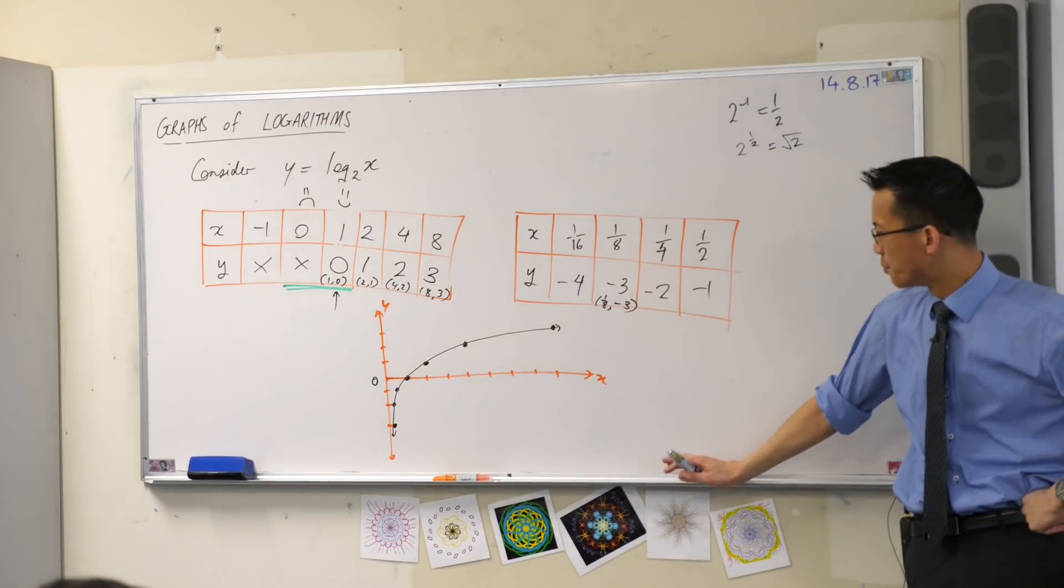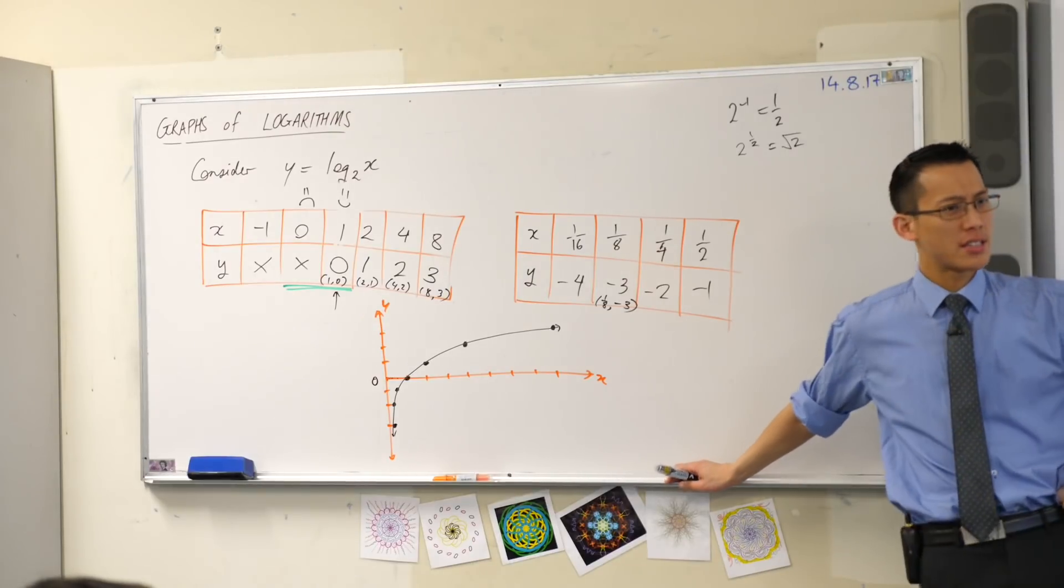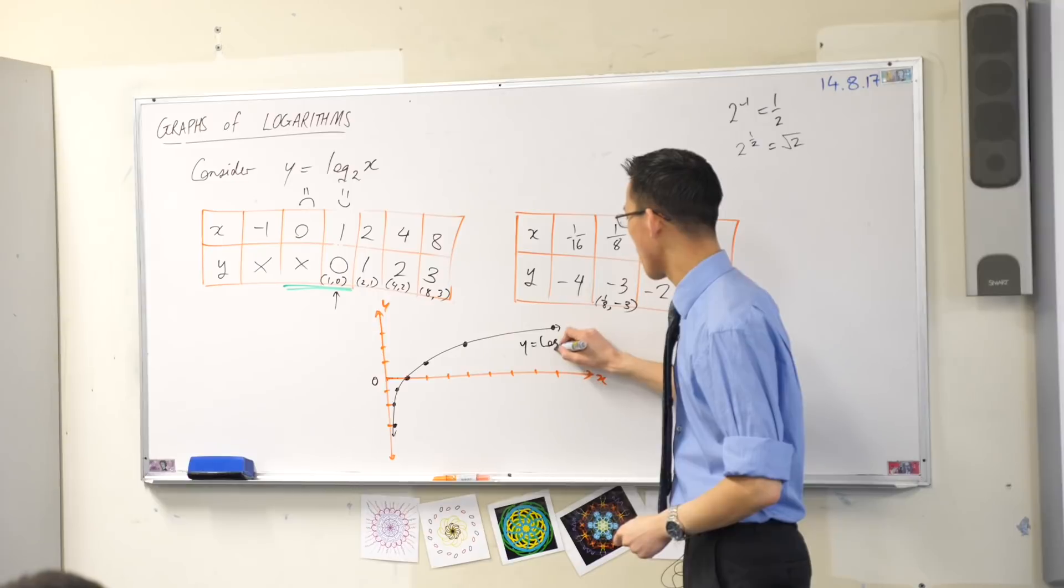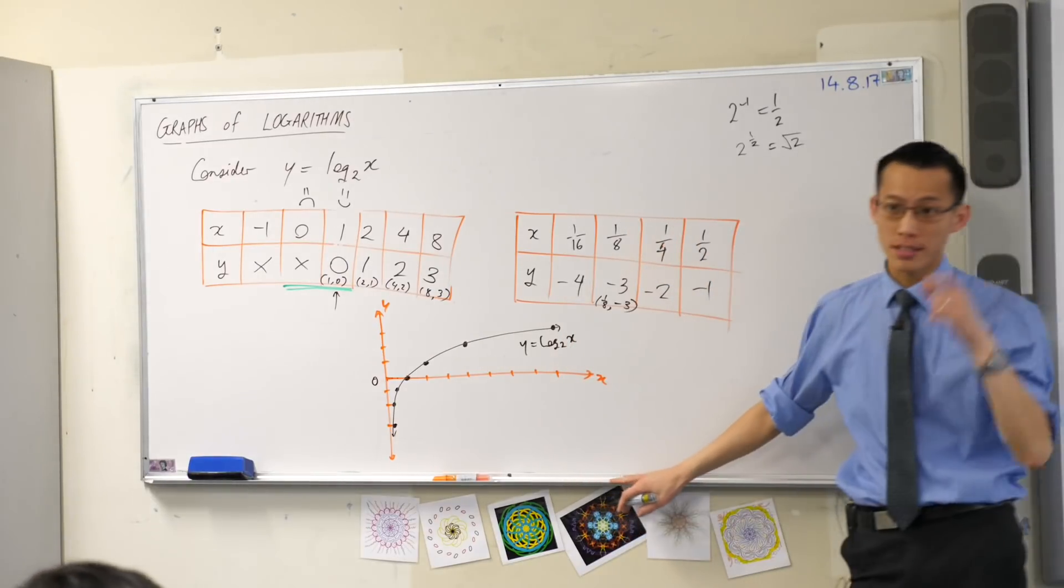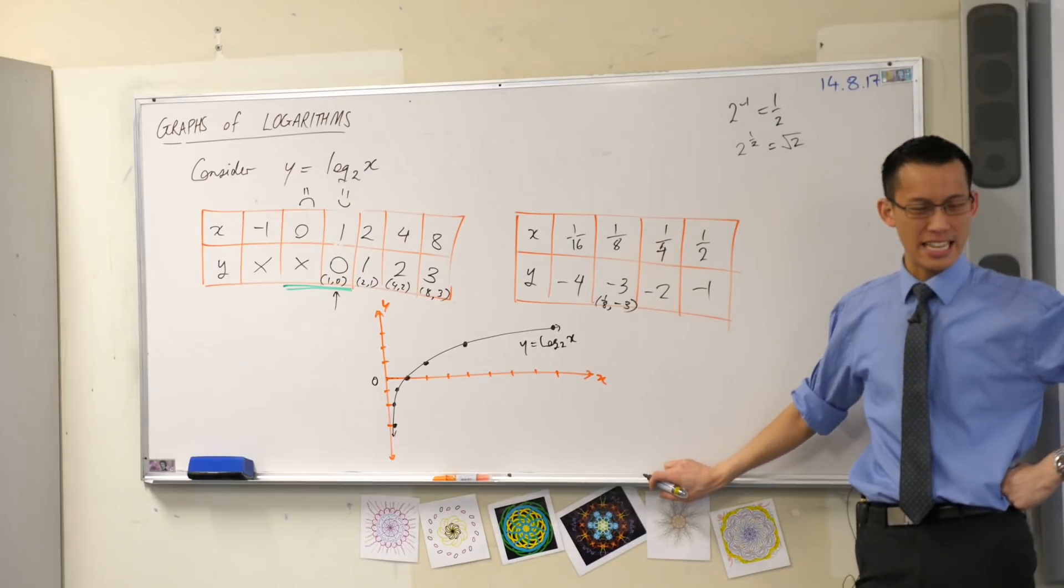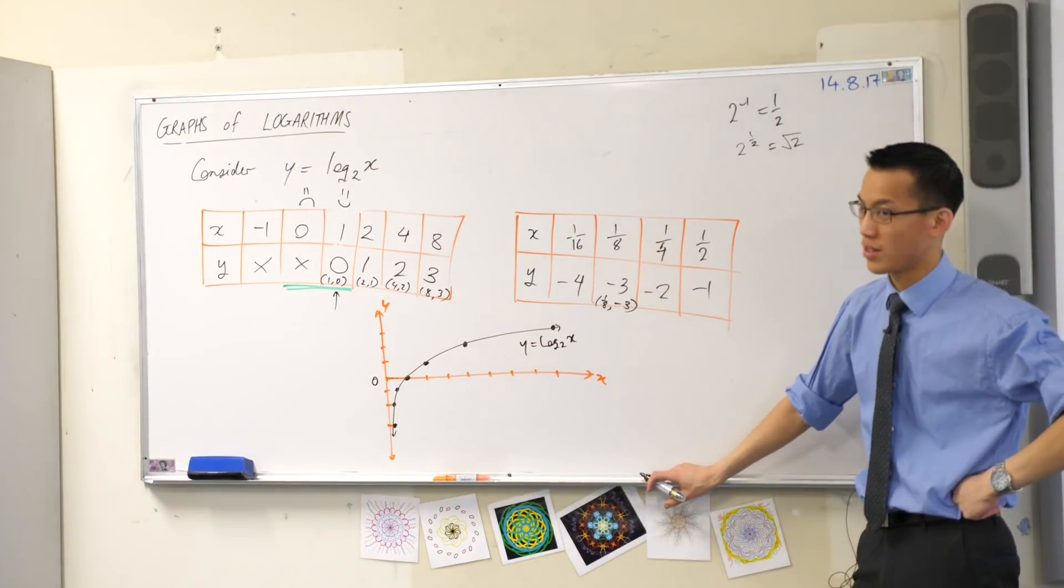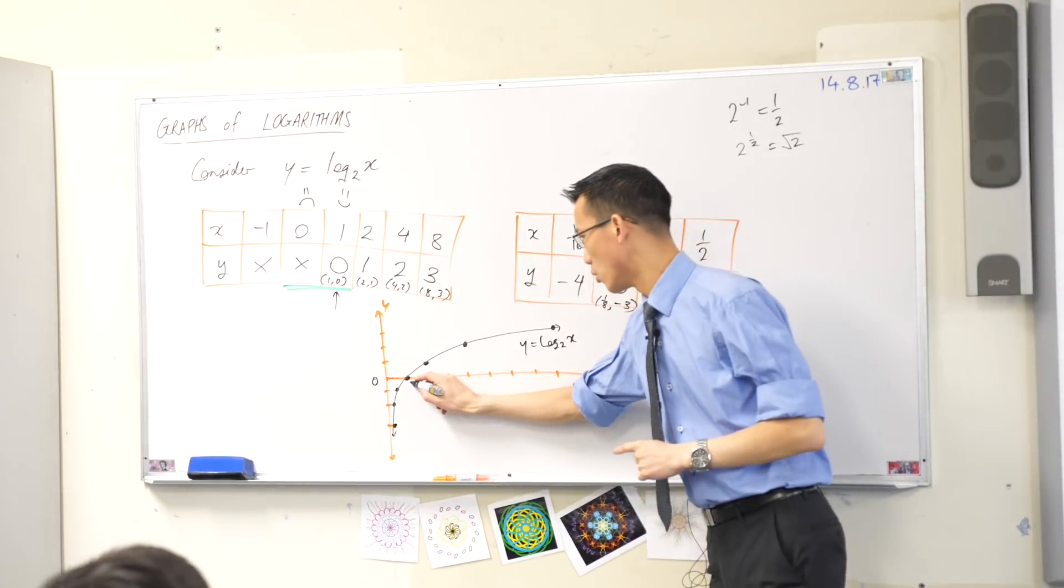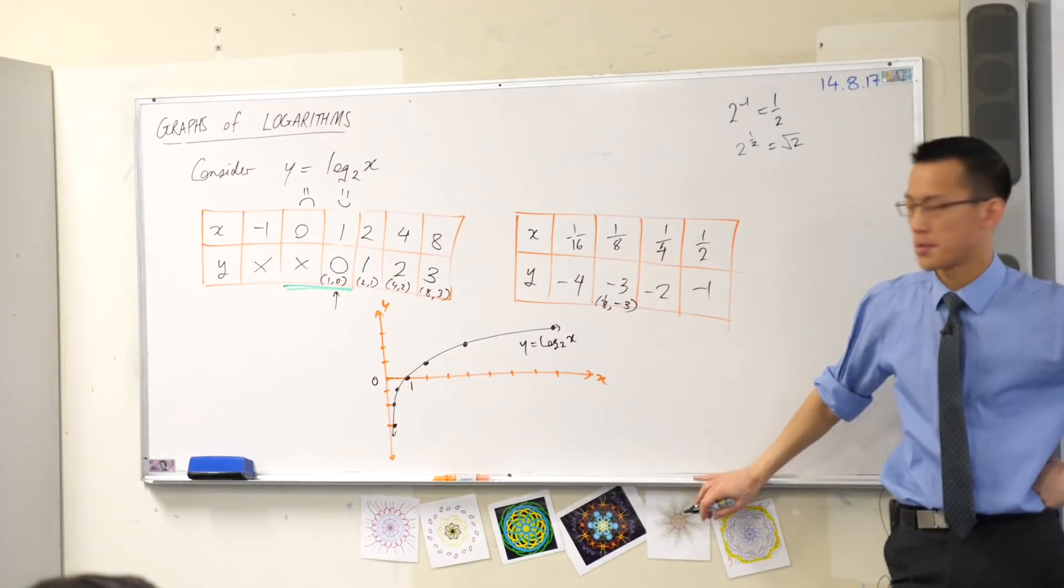Now this is pretty cool. Because this is a very interesting shape. We should label it, by the way. This is y equals log base two of x. It has a single intercept. An x-intercept. What's its value? Have a look. The x-intercept. It's just one. One comma zero are the coordinates.